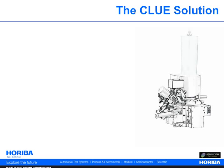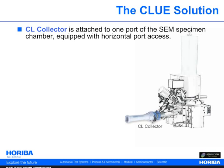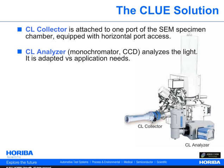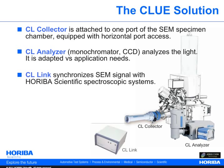Main components of the CLU include a CL collector, which is attached to an SEM chamber equipped with a horizontal port axis. The CL analyzer analyzes the light and is adapted to your experimental requirements. HORIBA Scientific has extensive experience in spectroscopic systems and the design of the CLU is best adapted to fit your application needs. The CL-link is the electronic controller allowing perfect synchronization between the SEM and HORIBA Scientific spectroscopic systems for mapping and image processing.